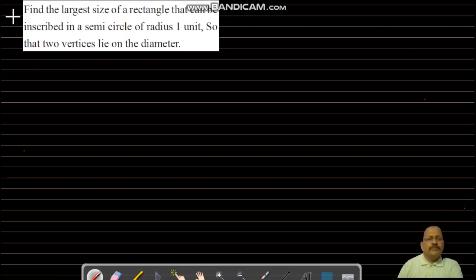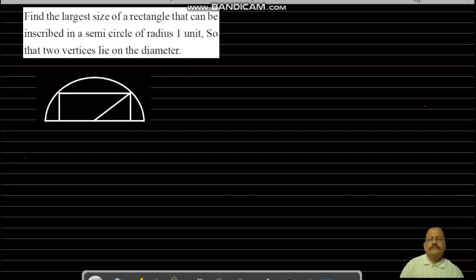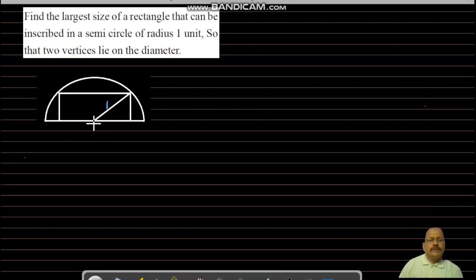The first problem: find the largest size of rectangle that can be inscribed in a semicircle of radius one unit so that two vertices lie on the diameter. I will draw an appropriate diagram. This is a semicircle; its radius given is one unit. Suppose from the center to a vertex along the base is x, and the height of this rectangle is y.